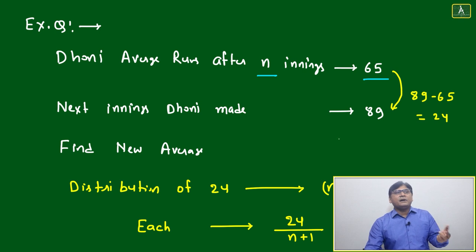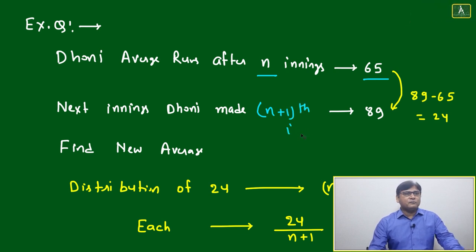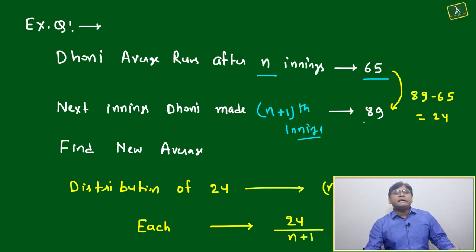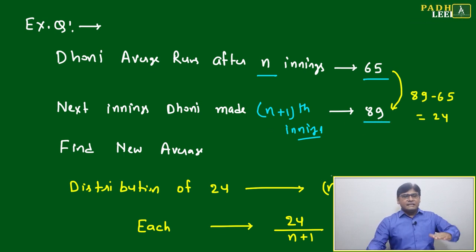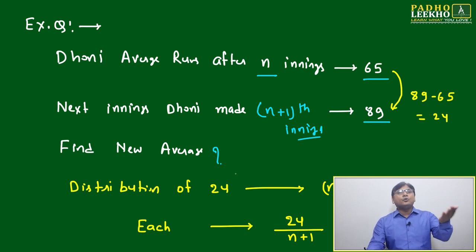Next inning, the very next inning after n innings, which you can say will be the (n+1)th inning - I'm giving you extra information that's not needed here but for clarity of thought. This is already understood. Next inning means (n+1)th inning. He is making 89 runs. After n innings average is 65, next inning he comes to play and makes 89. Now find the new average.